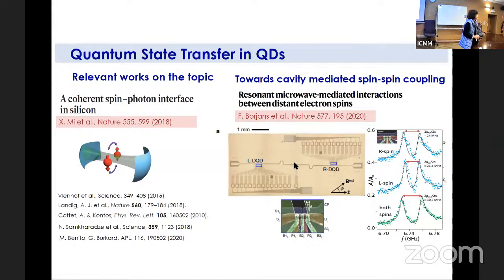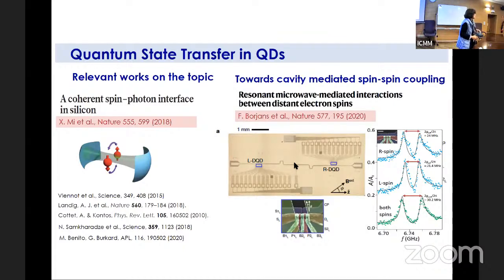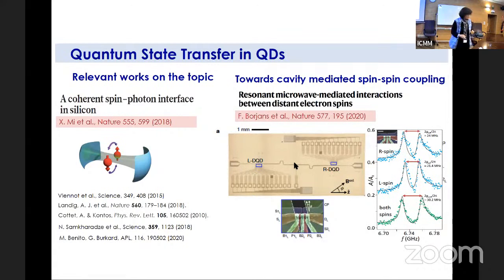In semiconductor quantum dots, different qubits can be implemented, but spin qubits are the most popular ones because they are robust against decoherence and relaxation. There are many works concerning the interaction of semiconductor qubits in quantum dots with cavities. Only recently were they able to implement a coherent spin-photon interface when just one spin of the electron is coupled to the cavity. The problem is that this spin has a very small magnetic moment, making strong coupling difficult. What they do is use electron dipole interaction plus hybridization of charge and spin, employing gradients of magnetic fields or spin-orbit interaction. There are also other hybrid systems using surface acoustic waves, but I want to speak about quantum dot arrays.